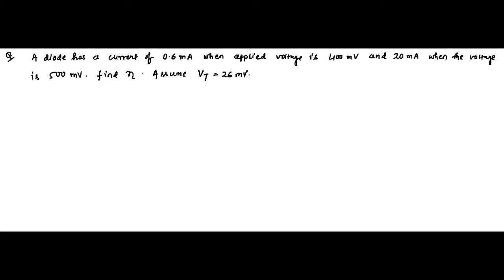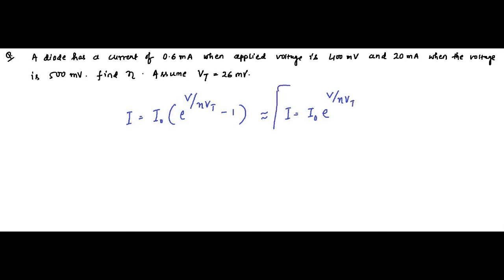First we write out the diode current equation: I = I₀ · e^(V / η·Vt) − 1. Normally the diode equation is written in this full form, but when the current is large in the forward direction we can approximate it as I = I₀ · e^(V / η·Vt). This simplified form is the equation we will be using to solve this question.